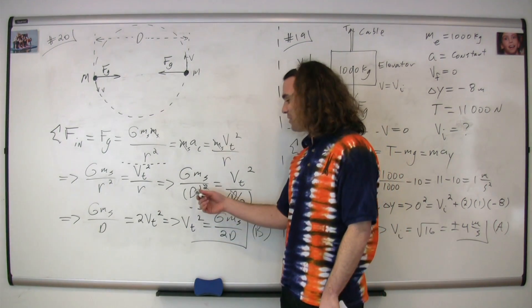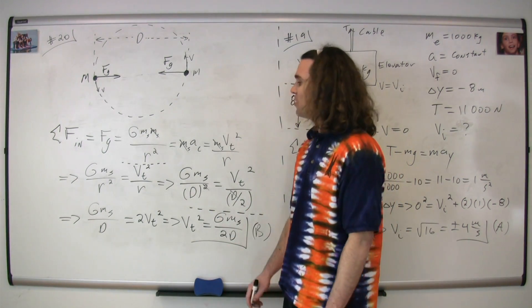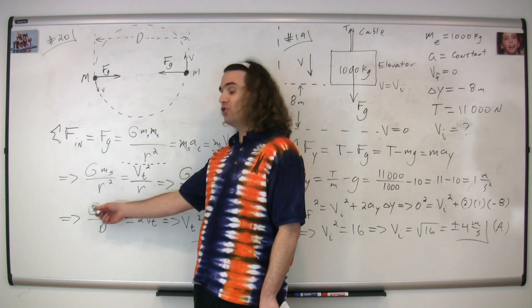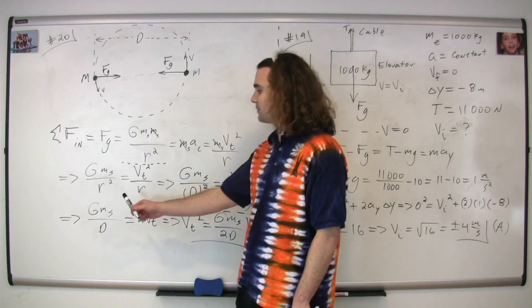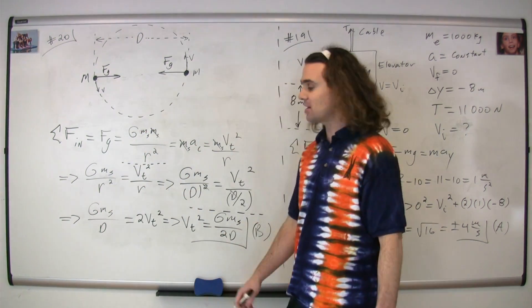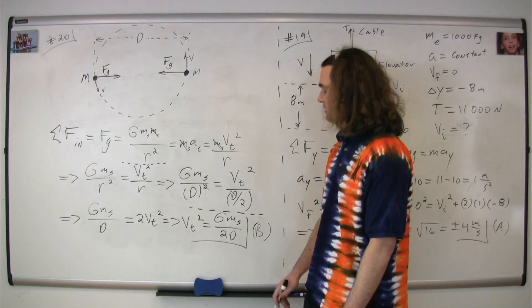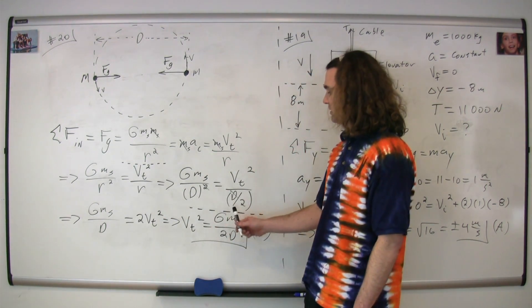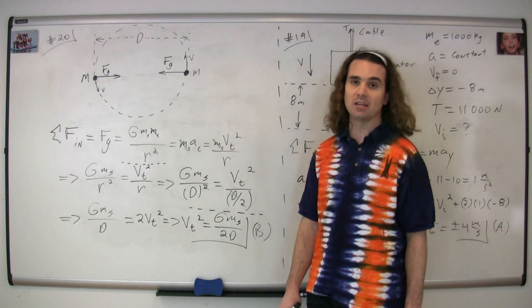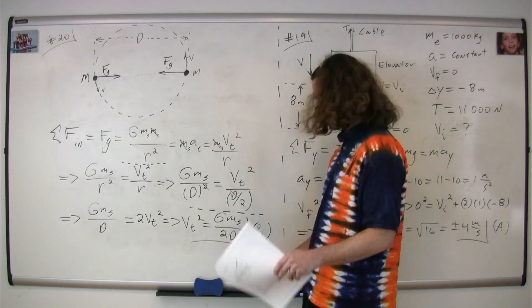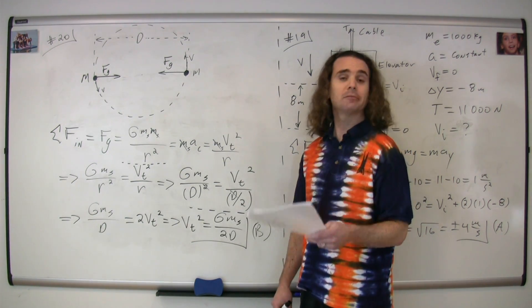Now we can cancel out one capital D from both sides. We get GM/D equals 2v². Dividing both sides by 2, v² equals GM/(2D), which is answer B. The correct answer is B.